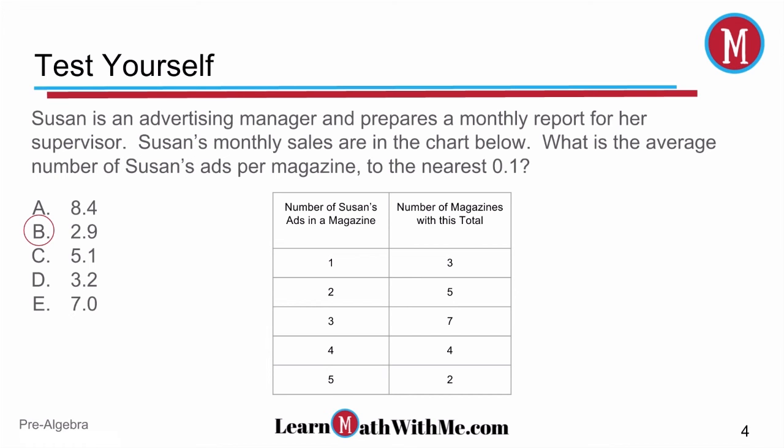So the first thing we want to look at is if she has three magazines with one ad, how many total ads does she have? One times three is three. She has five magazines that have two ads in them, so two times five is ten.